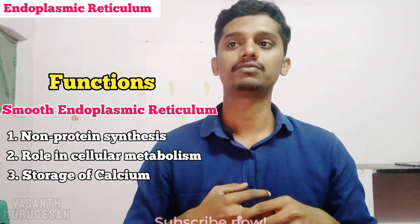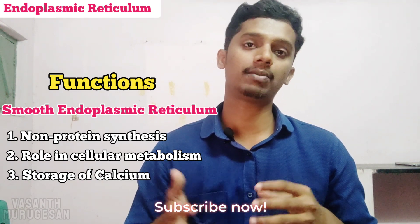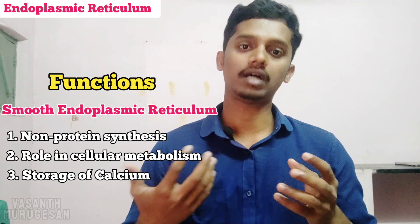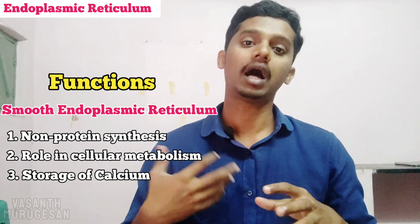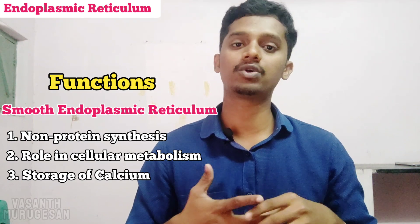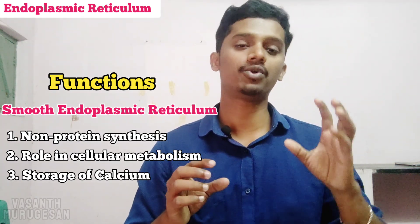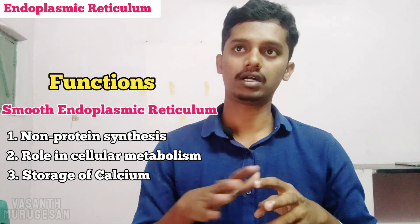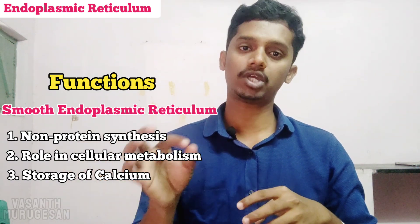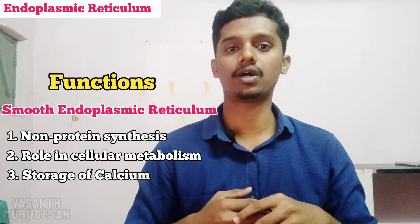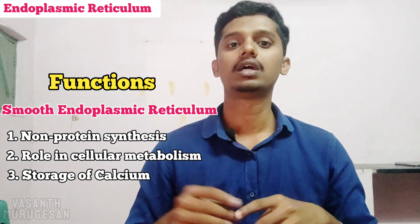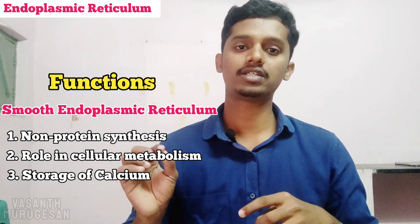The third function is storage of Calcium. Calcium is very important — it is important for muscle contraction and body movement. Calcium is stored in the Smooth Endoplasmic Reticulum of each cell. In muscle cells specifically, the Smooth Endoplasmic Reticulum is called the Sarcoplasmic Reticulum. So Smooth ER is involved in storage and maintenance of calcium.